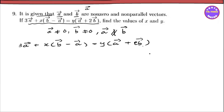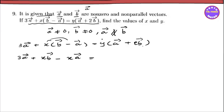If we have a vector and b vector, setting the equation equal to zero and rearranging, we get y times a vector plus 2y times b vector, and then a vector dot b vector equals zero.